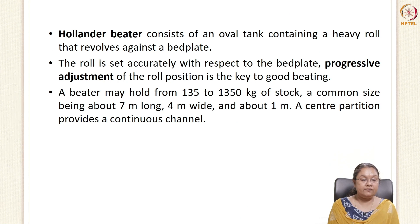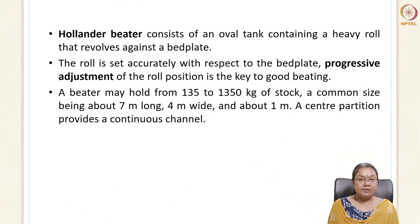A Hollander beater is generally used for the beating purpose. It is an oval tank containing a heavy roll which revolves against a bed plate. The roll is set accurately with respect to the bed plate with progressive adjustment. The beater can hold a stock of around 135 to 1350 kg and has various dimensions, with a central partition that helps in the continuous movement of the pulp.